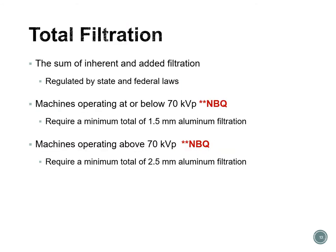Adding together inherent filtration and added filtration gives us what is called total filtration. Machines that operate at or below 70 kVp require a total of 1.5 millimeters of aluminum filtration. Machines operating above 70 kVp require a minimum total of 2.5 millimeters of aluminum filtration. Since inherent filtration is about 0.5 to 1 mm, we can calculate how many additional 0.5 mm aluminum discs are needed to reach the required total for machines above or below 70 kVp.